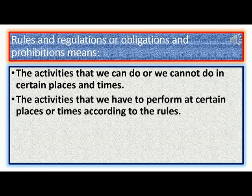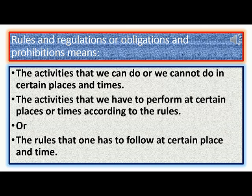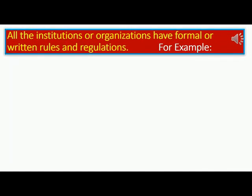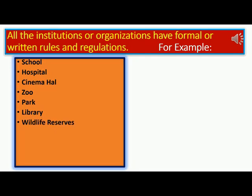Rules and regulations, or obligations and prohibitions, means the activities that we can do or we cannot do in certain places and times — the activities that we had to perform at certain places or times according to the rules, or the rules that one has to follow at a certain place and time. All institutions or organizations have formal or written rules and regulations.